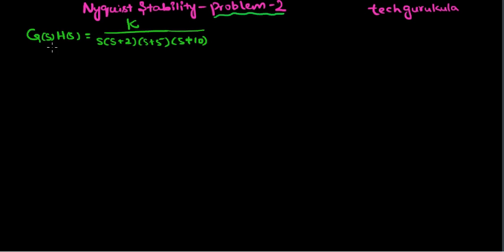In this video, we are going to solve this problem where G(S)H(S) is given. In this case, they have given K as a variable and asked: if this system is connected in closed loop, what are the values of K for which that closed loop system will be stable?